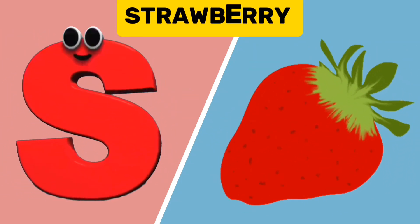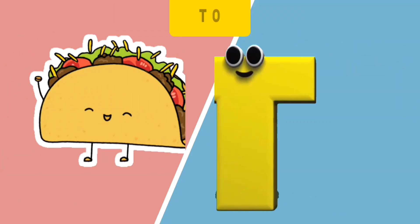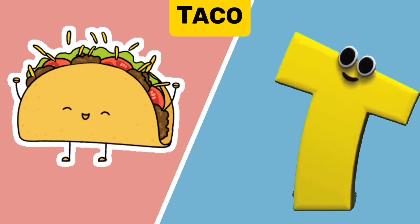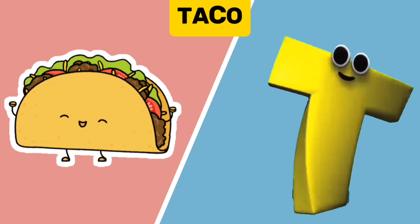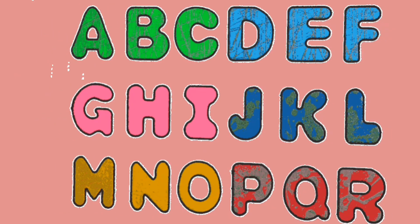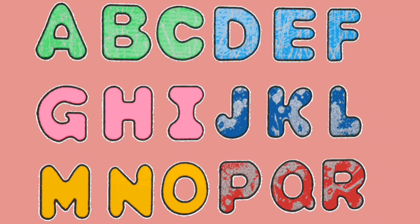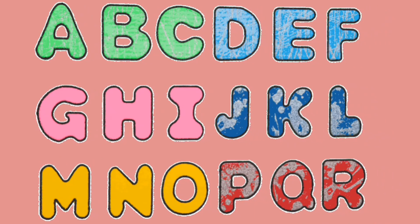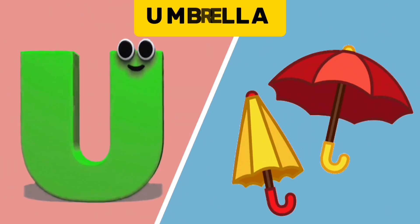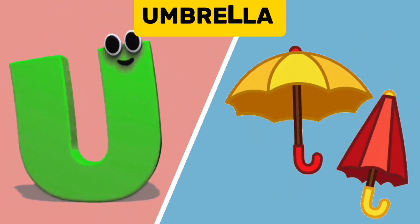S is for Strawberry. S, S. Strawberry. T is for Taco. T, T. Taco. It's the letters of the alphabet.